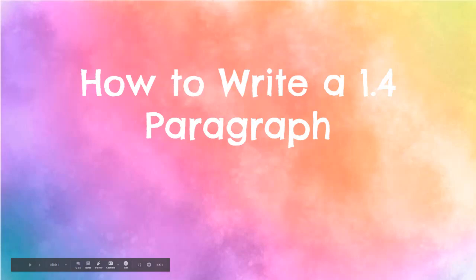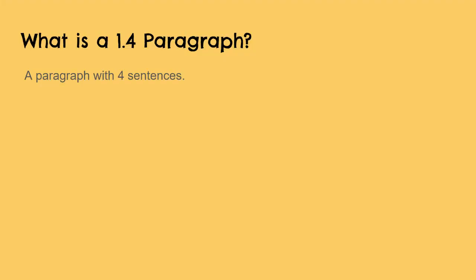Today we're going to talk about how to write a 1.4 paragraph. A 1.4 paragraph is the format that we use all year long when you are writing just a one-paragraph response to talk about a source. Normally you will have a source that goes along with this paragraph, and basically all it is is one paragraph with four sentences.